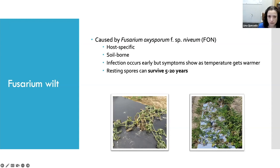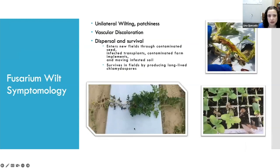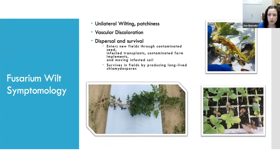The vascular tissues become inflamed and you get that wilting. Typical symptoms include what we call unilateral wilting — you may see just one vine wilting while the rest of the plant looks okay. You'll also see patchiness in the field, with hot spots where some areas look diseased and other areas look fine.